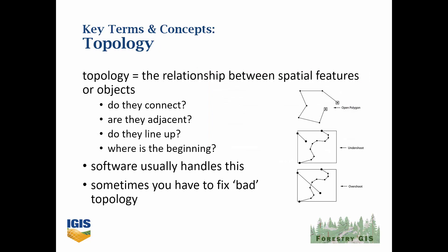Topology is a bit of a specialized term, but you still hear it quite a bit. It refers to the geometric relationship of the components of a spatial feature, or the spatial relationship between features — things like: do two lines connect if they're supposed to? Do the edges overlap where they're supposed to? Where is the beginning and the end of the line? These are all topological questions, and there are tools in GIS software that help you diagnose and, if needed, fix the topology.